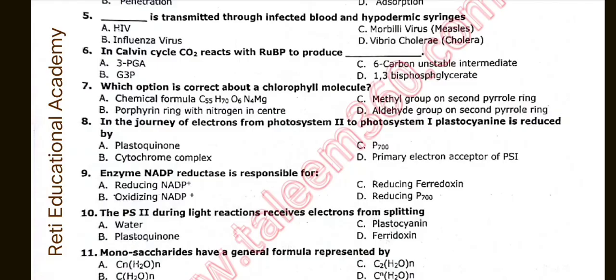Question number seven: Which option is correct about a chlorophyll molecule? The correct option is A: Chemical formula C55 H70 O6 N4 Mg. Question number eight: In the journey of electrons from Photosystem 2 to Photosystem 1, plastocyanin is reduced by. The correct option is B: P200. Question number nine: Enzyme NADP reductase is responsible for. The correct option is A: Reducing NADP+.